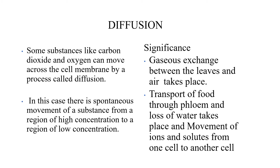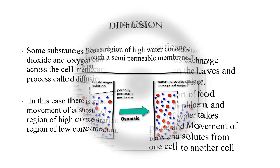The significance of diffusion: gaseous exchange between the leaves and air takes place. Cell is found in stem, root, leaf, and branch everywhere. CO₂ enters the plant during photosynthesis, and during respiration, CO₂ comes out from inside the plant. Transport of food through phloem, loss of water by xylem, and movement of ions and solutes from one cell to another all take place with the help of diffusion.